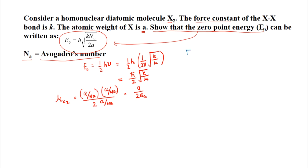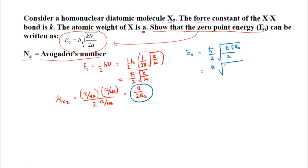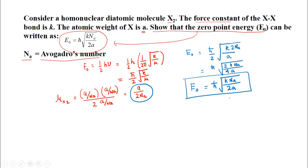Substituting the reduced mass into the zero point energy expression: E₀ = (ℏ/2)√(K / (A/2N_A)) = ℏ√(KN_A / (2A)) / 2 = ℏ√(KN_A / (2A)). This is the same expression we were asked to show, confirming our result.